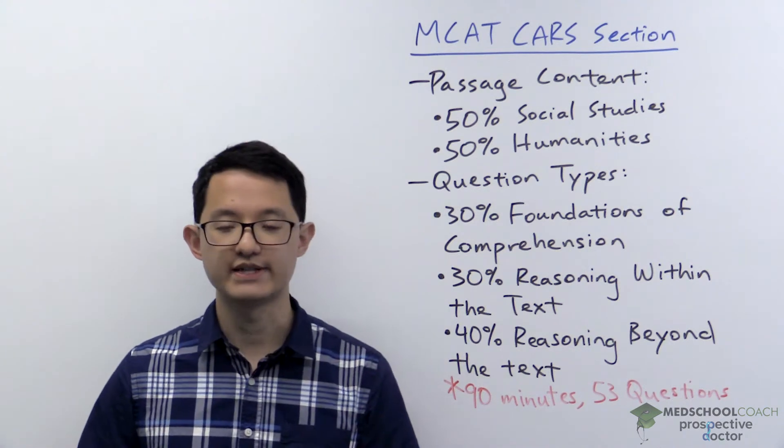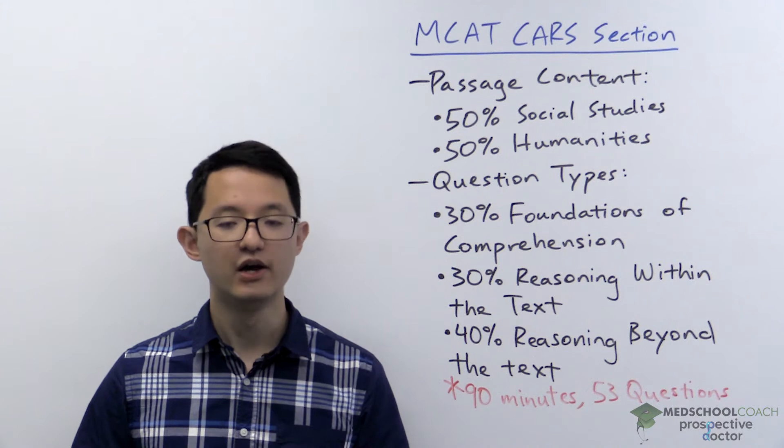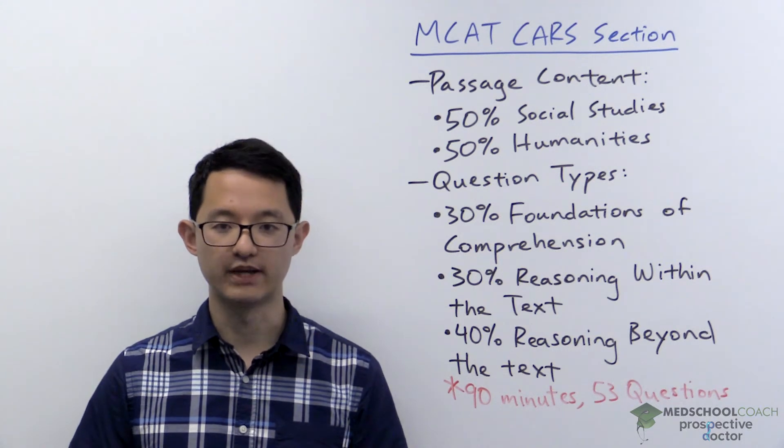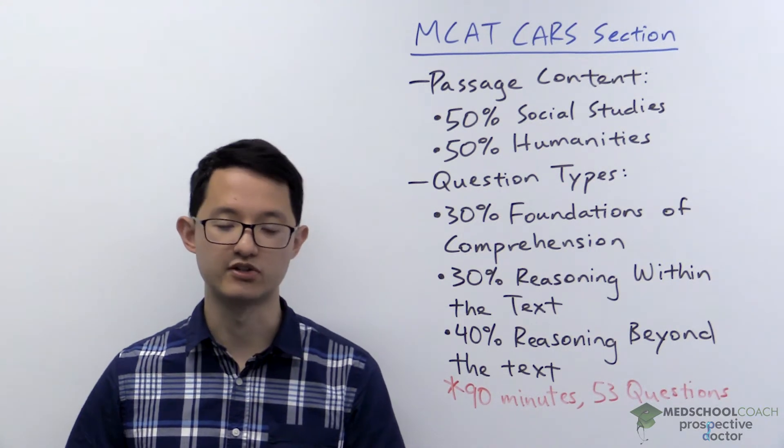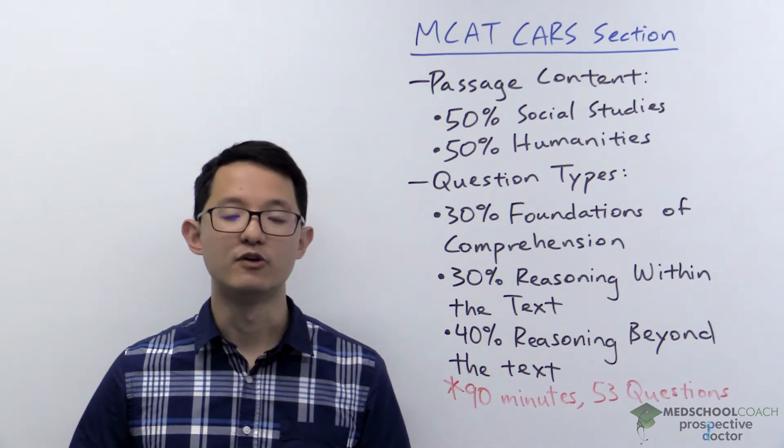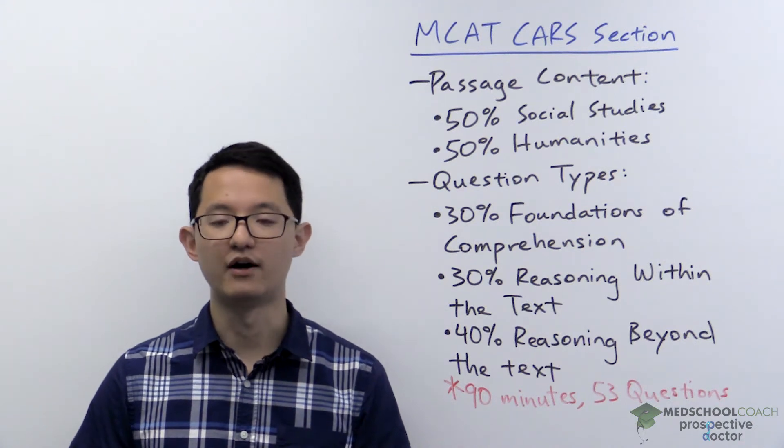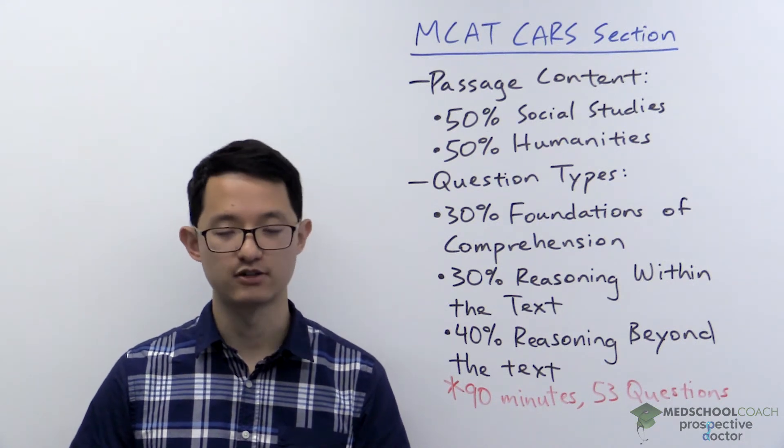Reasoning beyond the text questions ask you to make extrapolations from passage information or to consider how new information affects information mentioned in the passage. A common reasoning beyond the text question stem is: which of the following, if true, would most weaken the author's argument about X topic?